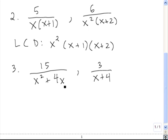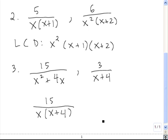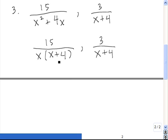In this first case, x squared plus 4x is not in factored form, so the first thing that we need to do is factor it. The greatest common factor of these two terms is x, so we want to pull that x out. And if we do, we're left with an x plus 4. The second denominator is already factored, so we'll just keep it the same. Now both denominators are fully factored, so we're ready to determine the LCD.